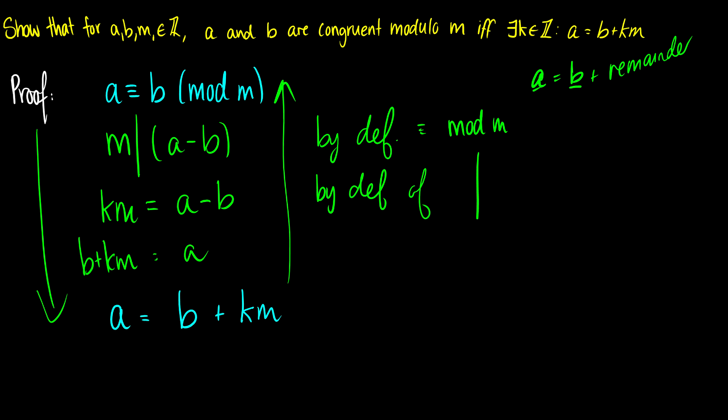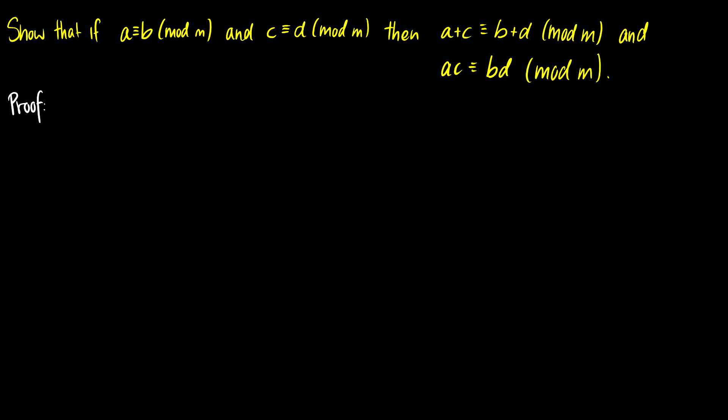So with that being said, let's prove something more. So if a is congruent to b mod m, and c is congruent to d mod m, then a plus c will be congruent to b plus d mod m, and a times c will be congruent to b times d mod m. So let's prove the first one here.